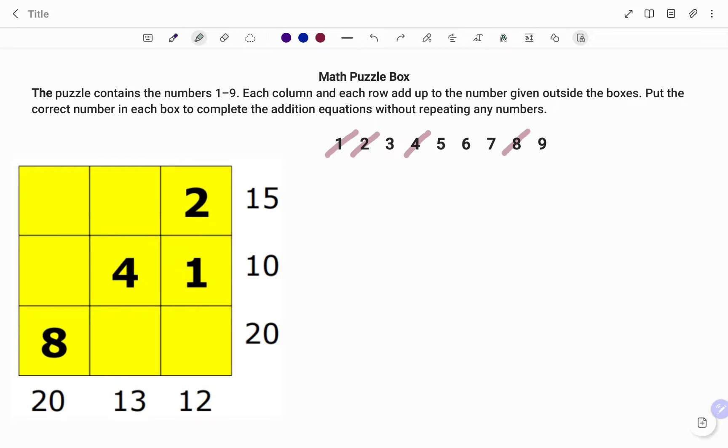So therefore, starting with the first column from my right, I'm going to add 2 plus 1 plus a missing value. I should have 12. So I'm going to replace the missing box with the variable x.